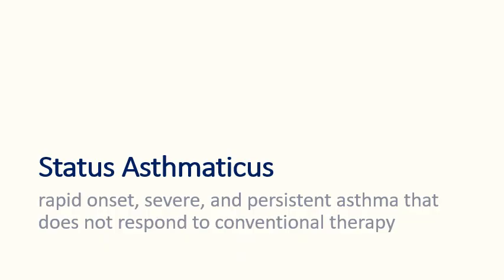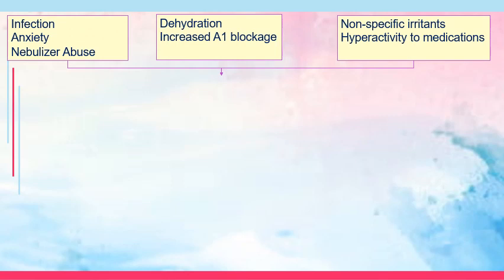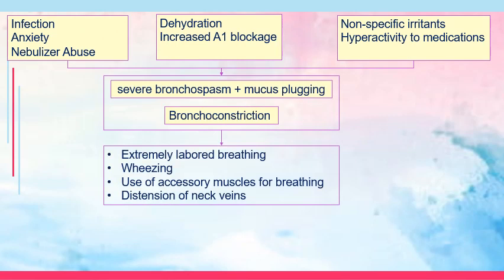Now let's talk about status asthmaticus, defined as the rapid onset of severe and persistent asthma that does not respond to conventional therapy. Take note of the words severe, rapid onset, and does not respond to conventional therapy. The pathophysiology is the same as asthma: infection, anxiety, dehydration, increase in alpha-1 blocking, and nonspecific irritants with hyperactivity to medications.